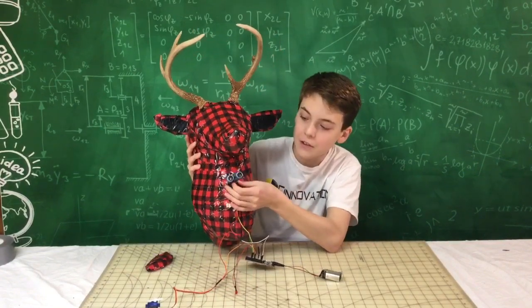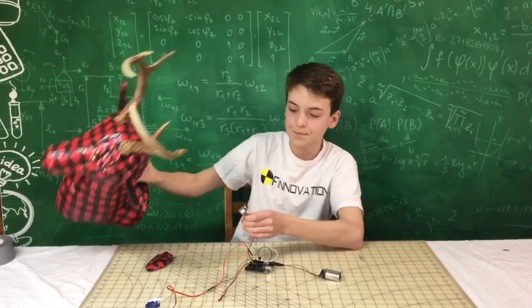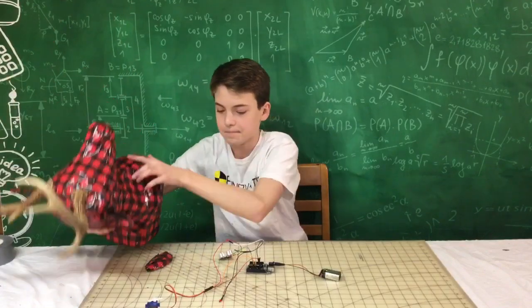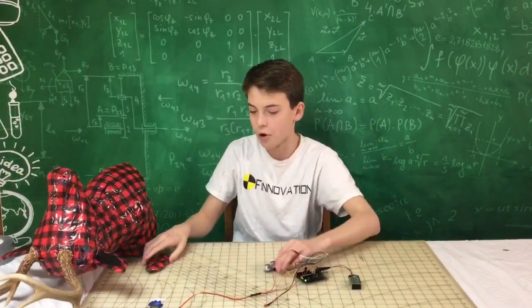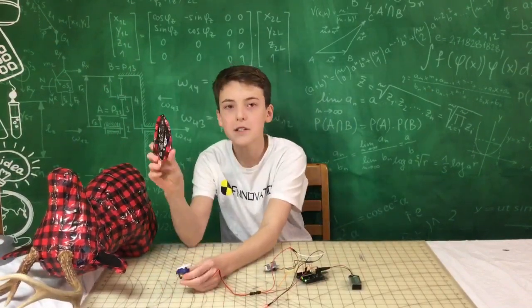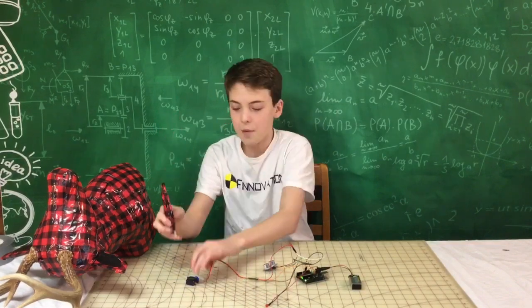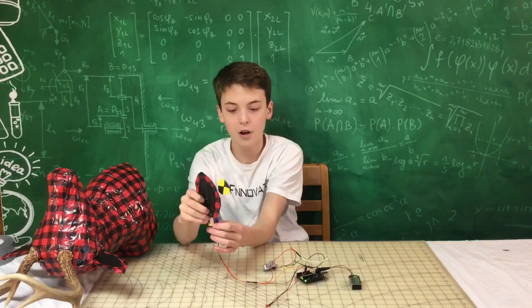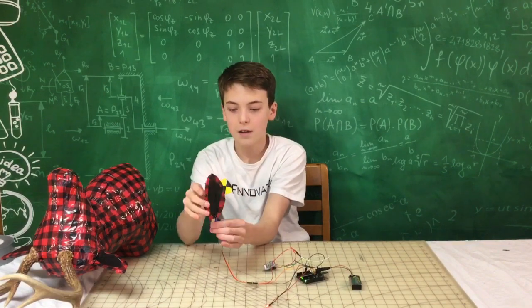Then what we're going to do is we made an extra ear that has a little bit more support in it, aka just a popsicle stick. And we're going to grab another popsicle stick and run it this way, attach it to our motor, and it'll spin.